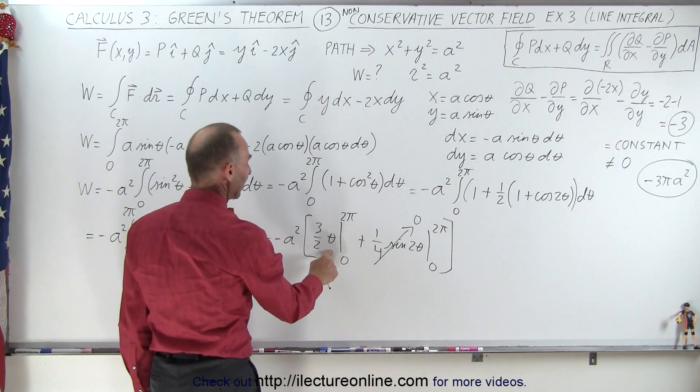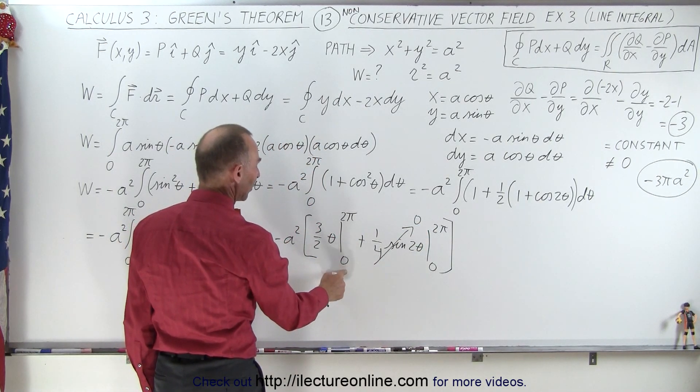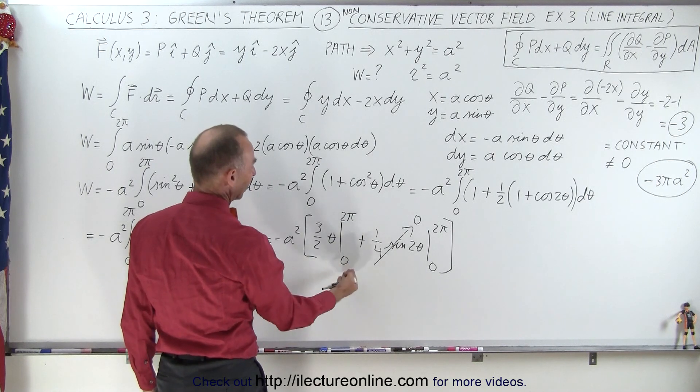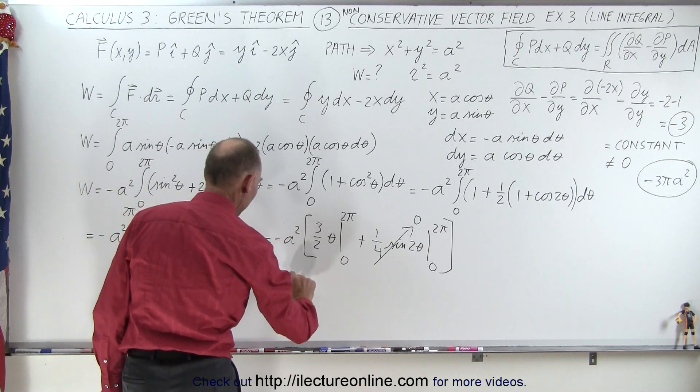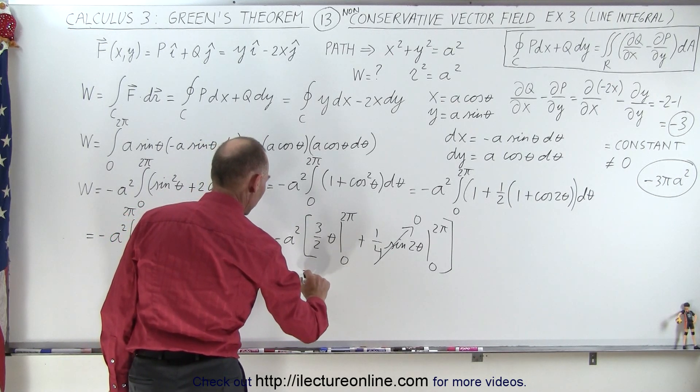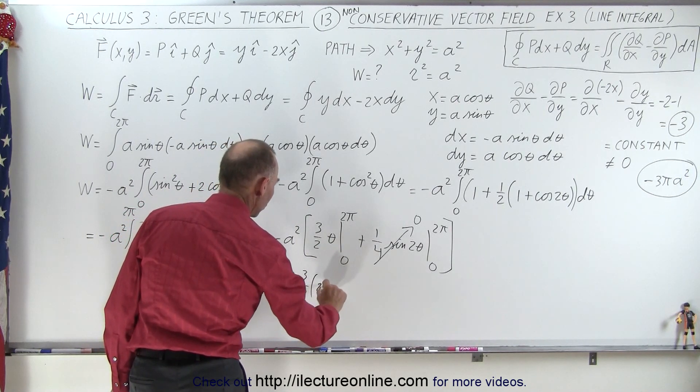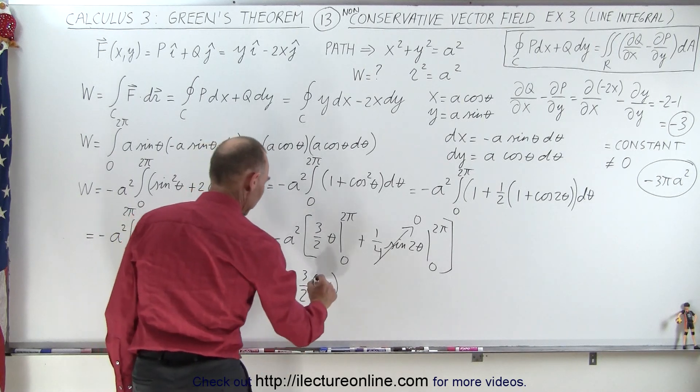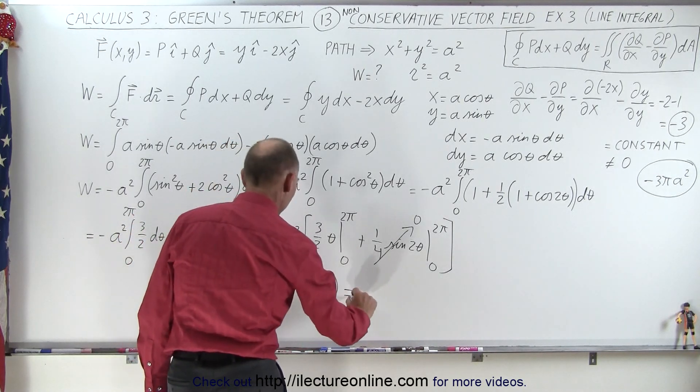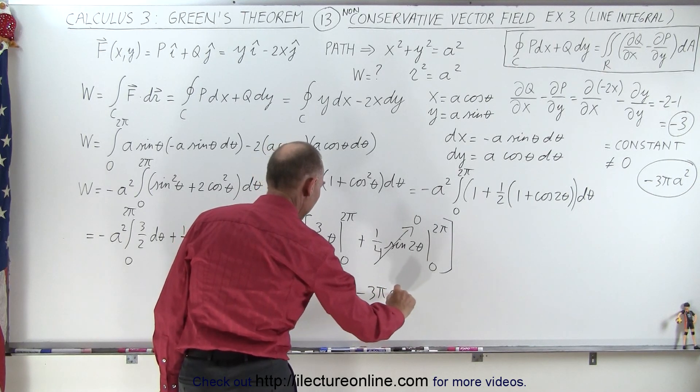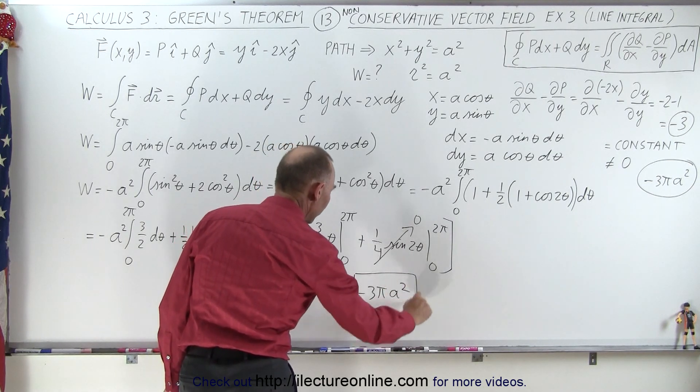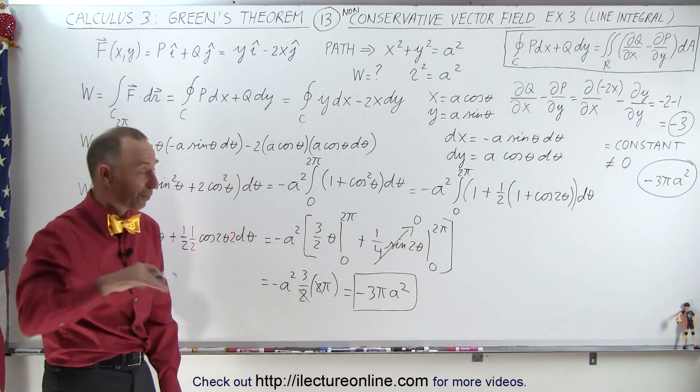And here, what I get out of here is simply, when I evaluate, when I plug in the lower limit I get 0, when I plug in the upper limit I get 2 pi. So this is equal to minus a squared, times 3 over 2, times 2 pi, and the 2 cancels out, and so this gives me minus 3 pi a squared, and hopefully that's the same result as we got in the previous video.